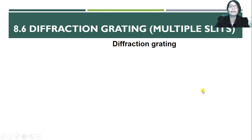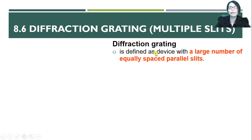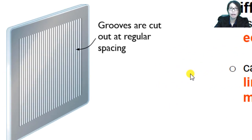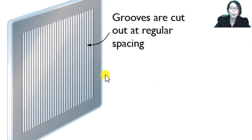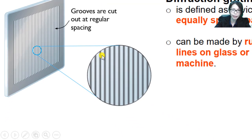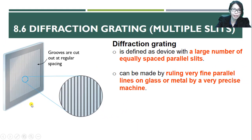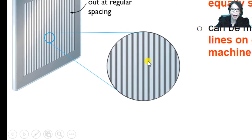So what is a diffraction grating? A diffraction grating is defined as a device with a very large number of equally spaced parallel slits. It can be made by ruling very fine parallel lines on glass or metal by a very precise machine. As you can see when zoomed in, grooves are cut out at a regular spacing — this is what we call a diffraction grating.